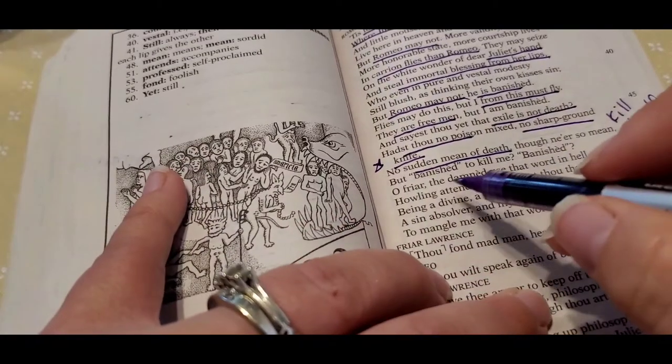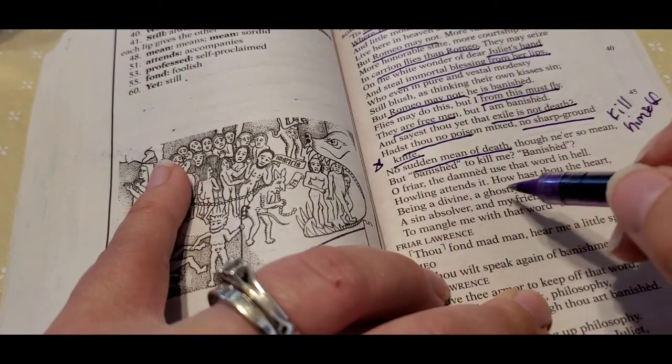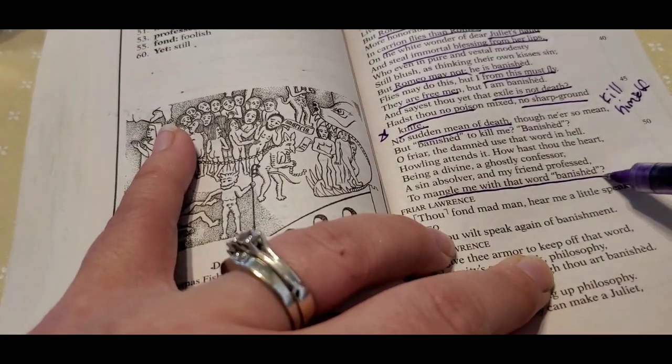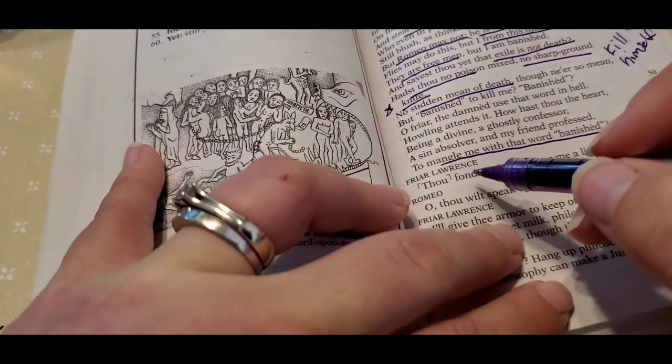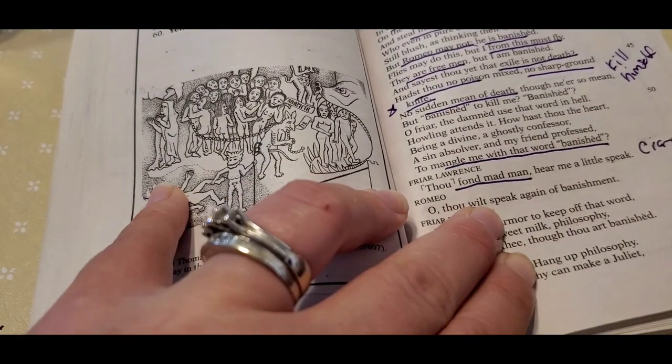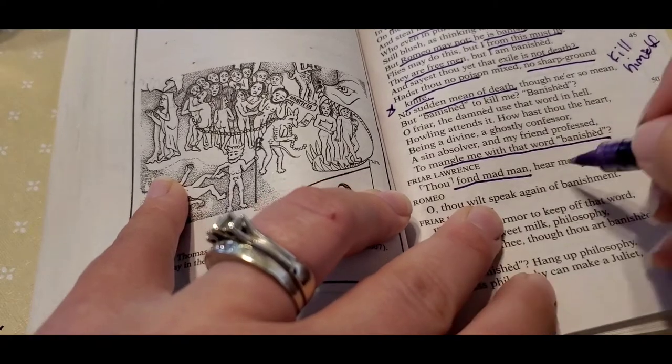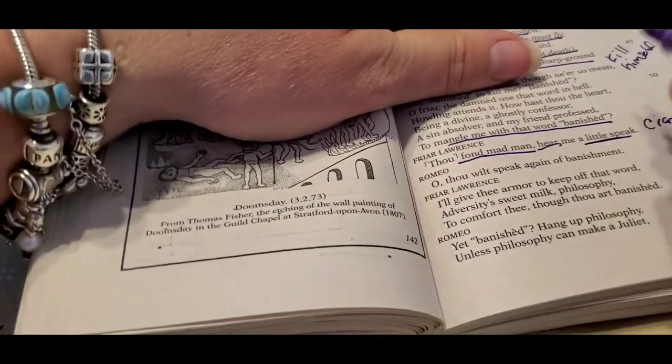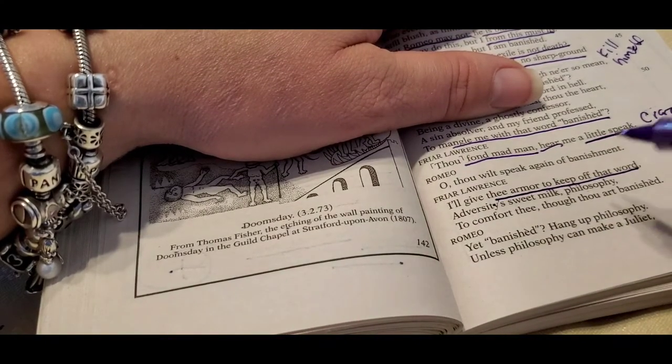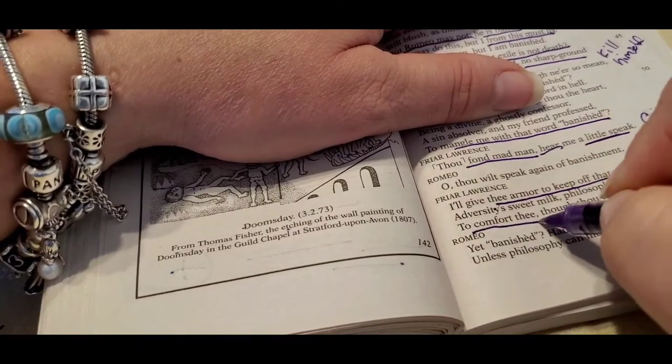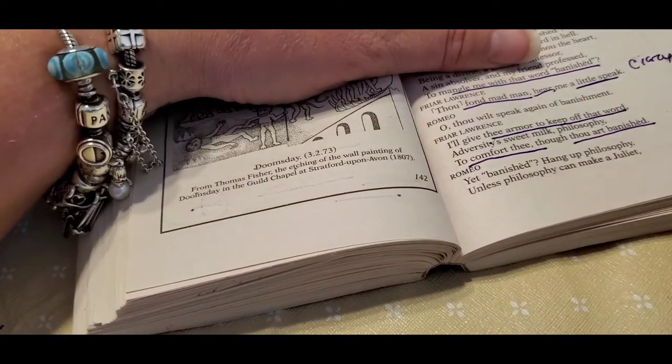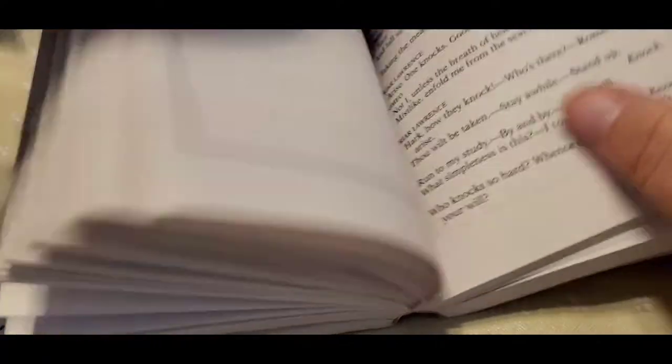And he says, and you say that exile is not death. And then look at this. He goes, do you have any poison or sharp ground knife or means of sudden death? Because he wants to kill himself. And he says, oh, Friar, you know, you use this word. How does your heart being divine goes the confessor. And you mangle me with the word banished. And Friar Lawrence goes, you are crazy. Listen to me. And he goes, I'm not listening to you. If you speak of banishment and he says, I will give you protection to keep that word off and comfort you even though you're banished. And he goes banished. No. All right. He's being really being a spoiled brat.